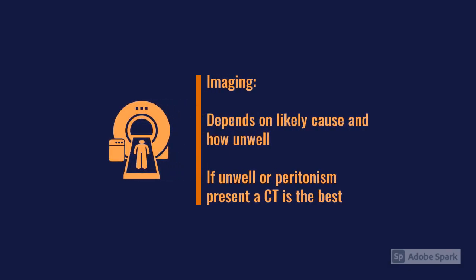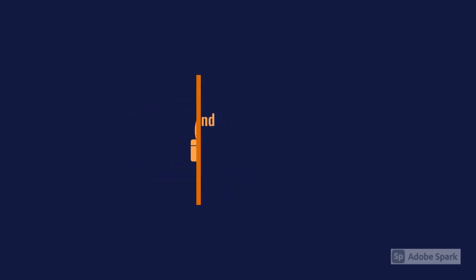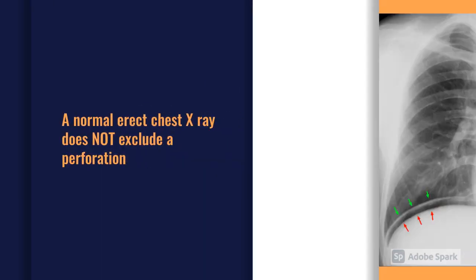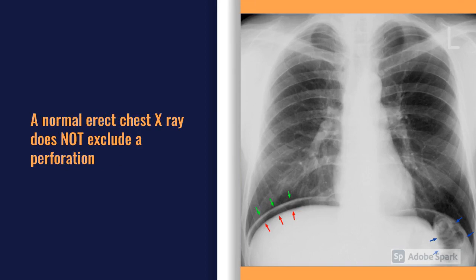Imaging depends on the most likely cause and how unwell the patient is. If the patient is unwell or there is clinical peritonism, CT is the most useful imaging modality. For stone disease such as gallstones, ultrasound is the most sensitive modality. For a gynaecological cause, a trans-vaginal ultrasound gives the best images. Erect chest X-rays are often first-line but are a rule-in test, not a rule-out test — a normal erect chest X-ray does not exclude a perforation.